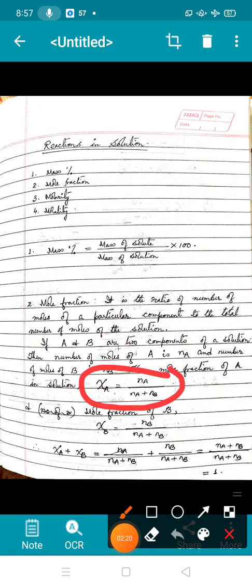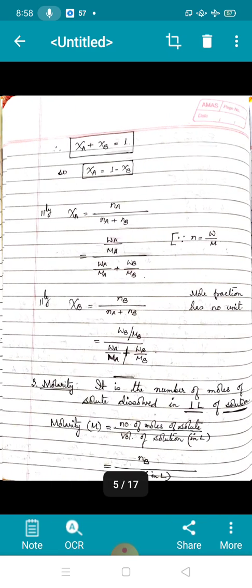Since it is the ratio of number of moles, it has no unit. If you know χ_A, then χ_B will be exactly similar: n_B divided by n_A plus n_B. If you add the two, the total comes to 1. So if I know χ_A, I can easily calculate χ_B, or if I know χ_B, I can easily calculate χ_A by using this formula.